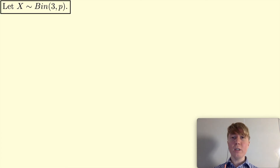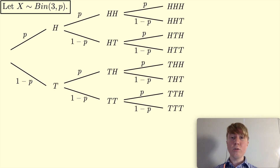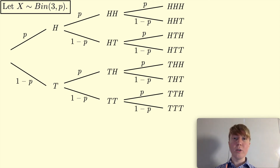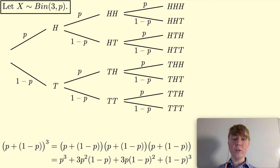Now let's look at the deep structure by returning to the n equals 3 example. When n equals 3, we're essentially flipping a coin three times and counting the number of heads, where p is the probability of heads. You can draw a probability tree to keep track of everything. This is the underlying structure of the binomial distribution: successive trials with fixed probability of success. The corresponding structure for the binomial expansion is (p + (1-p)) cubed — that is, (p + (1-p)) multiplied by itself three times.